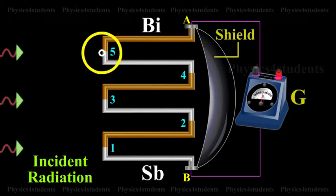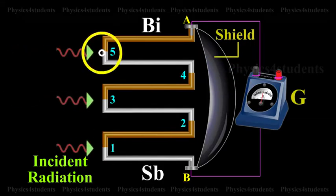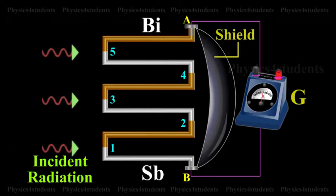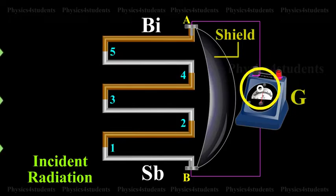When thermal radiation falls on one set of junctions, 1, 3, 5, a difference in temperature between the junctions is created and a large thermo-EMF is produced. The deflection in the galvanometer is proportional to the intensity of radiation.